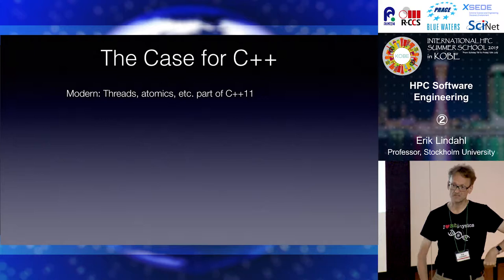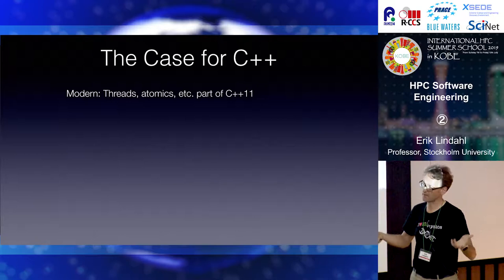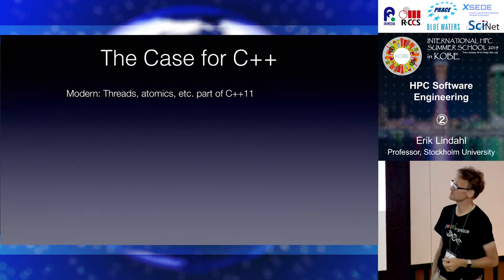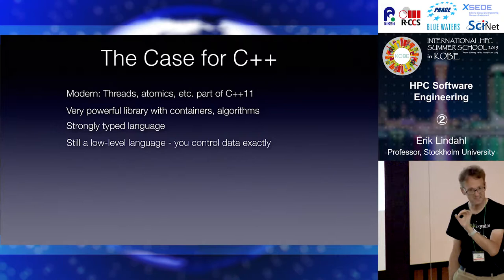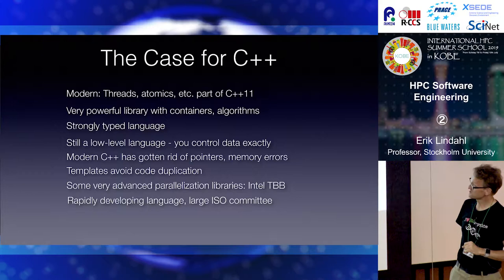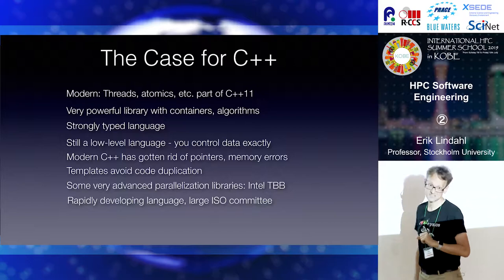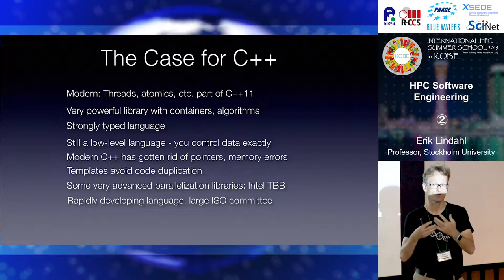The case for C++: it's the one language where things like threads and multi-core programming are a native part of the language. We've only had that hardware for 20 years, yet threads and atomics are part of modern C++. You have the standard template library. It's a very strongly typed language. As an HPC person, I like that it's a super low-level language — I can access the exact data placement, SIMD intrinsics, and everything. There is also very advanced support for parallelization libraries like Intel TBB and task-based parallelism.